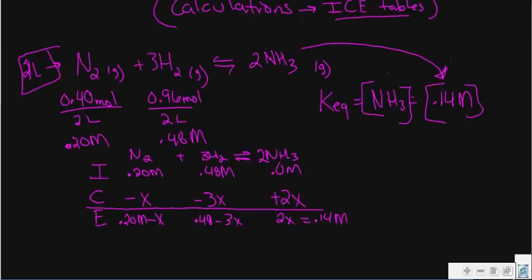So then, I can simply figure out what X equals. If 2X equals 0.14 molar, well then, X equals 0.07 molar. Okay, now that looks a little bit better. So 0.07 molar is what X is going to equal.